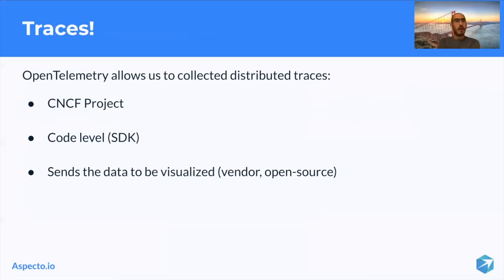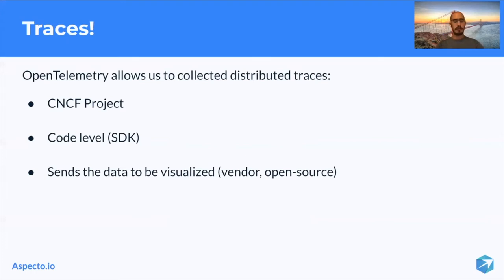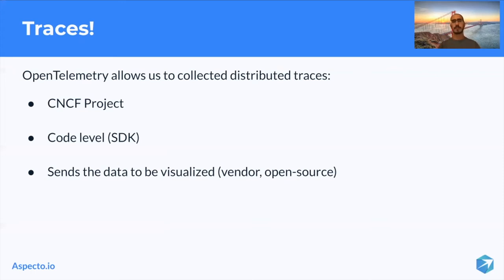End-to-end visibility — we can also call it traces. Maybe you're familiar with distributed traces, maybe not. Distributed tracing is the ability to collect data that tells us the end-to-end story. There is a project by CNCF called OpenTelemetry. This project knows how to collect traces, and OpenTelemetry is responsible for the collection part — it knows how to collect and ship data. You implement an SDK within your code, and there are many programming languages supporting OpenTelemetry. Then you need to figure out how to visualize it.